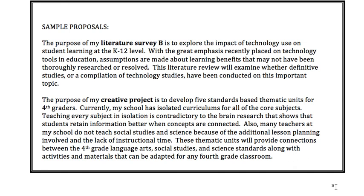One thing I want to suggest, especially if you're doing the first two literature surveys: sometimes people think they need to get all 50 sources first. Don't do that — it's overwhelming. Come up with some headings, brainstorm, and you can always tweak them. Then look for about five sources at a time.